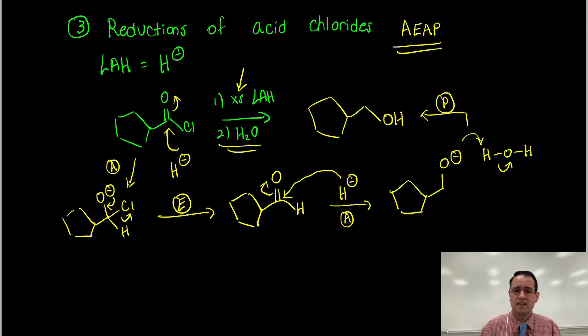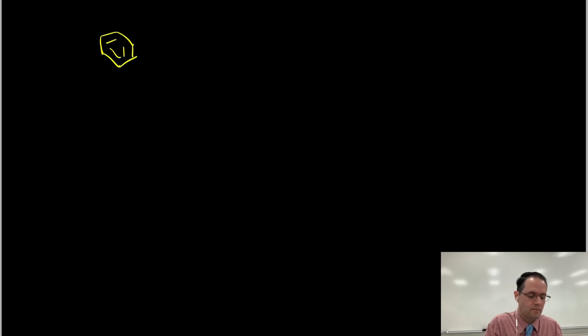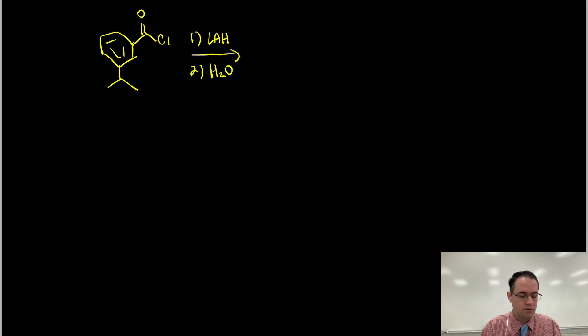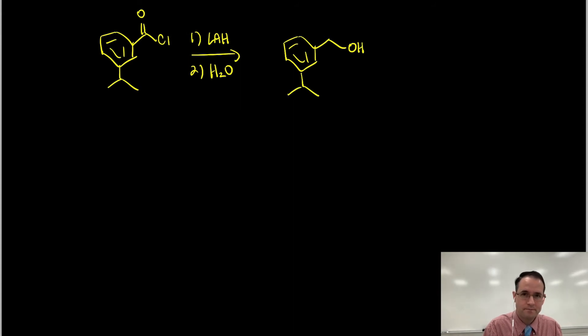The reduction of acid chloride with LiAlH4 is straightforward - you always form the primary alcohol. It doesn't matter what other groups you might have on the acid chloride; if we add LiAlH4 in excess followed by water workup, you're going to form a primary alcohol. Remember that hydride can react with the aldehyde intermediate, which is why you form an alcohol rather than stopping at the aldehyde.